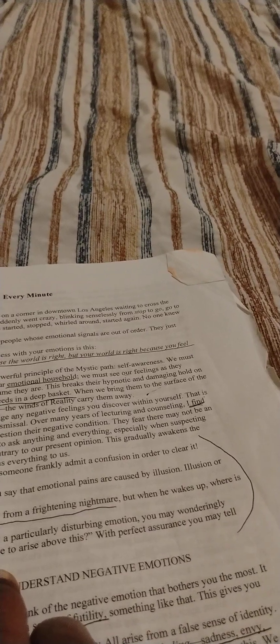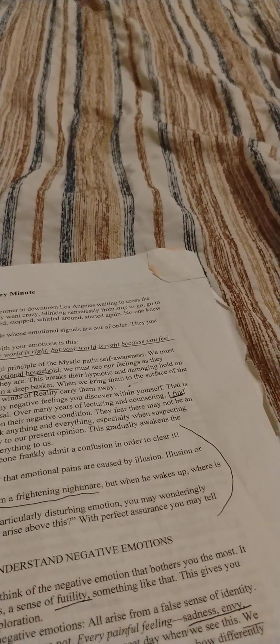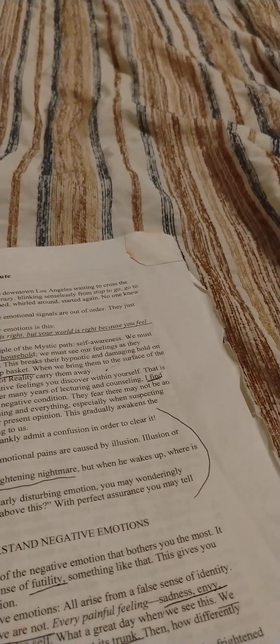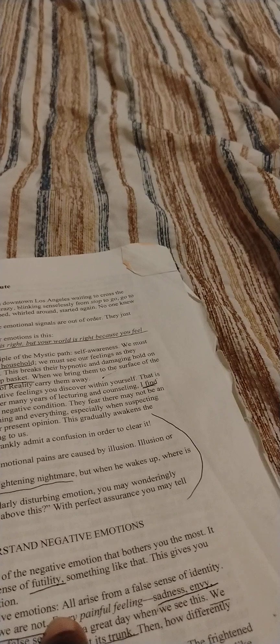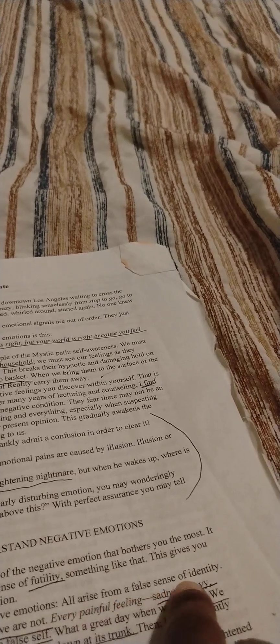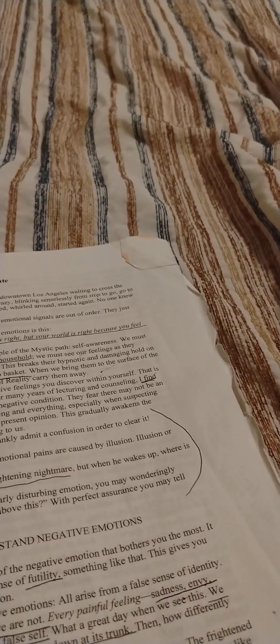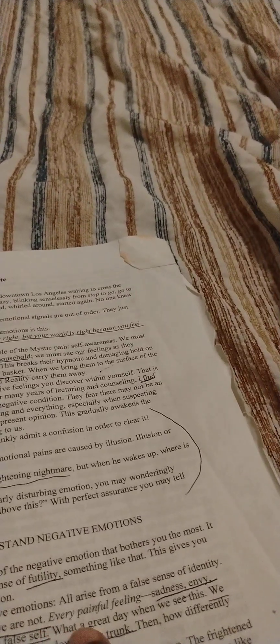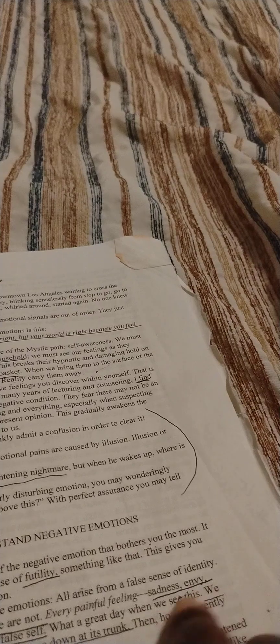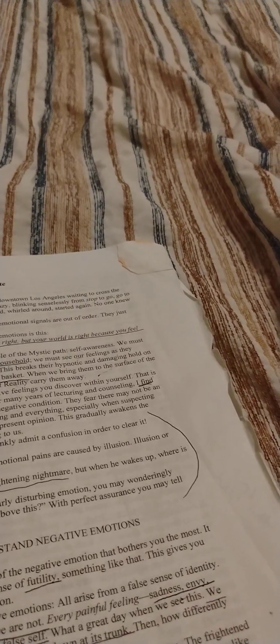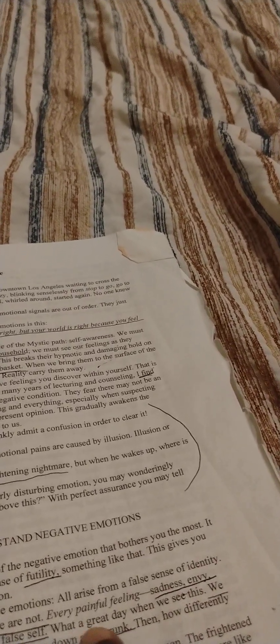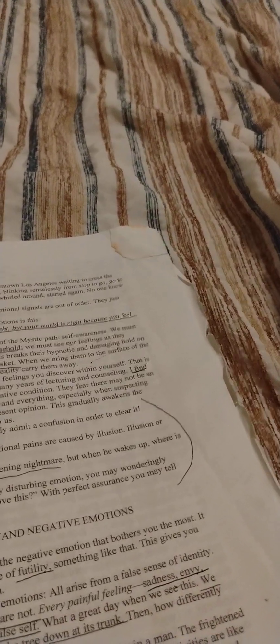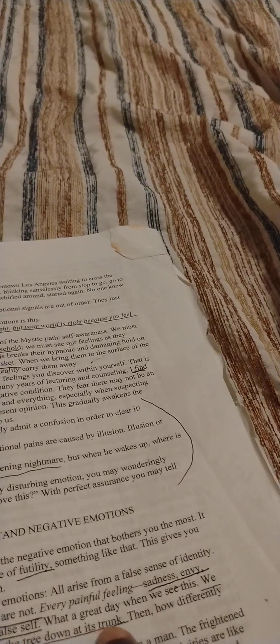When I tell you this book is so good, it is so good. How to understand negative emotion: grasp this basic fact about negative emotions. They arise from a false sense of identity. We think we are the false self, but we are not. Ego is really talking about every painful feeling. Sadness, envy, guilt, insecurity is sour fruit of the false self. What a great day when we see this. We can destroy the sour fruit by chopping the tree down at its trunk.